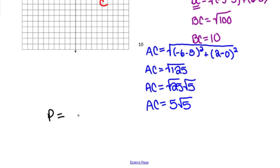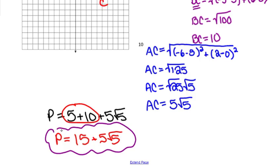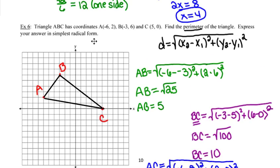Now I can find the perimeter by adding all three side lengths: 5 plus 10 plus 5√5. Two of these terms are like terms and combine to give 15, but 5√5 cannot be combined with the constants. So the perimeter is 15 plus 5 square roots of 5 — an exact, unrounded answer in simplest radical form. If the directions had asked for a decimal, I would use a calculator and round appropriately.